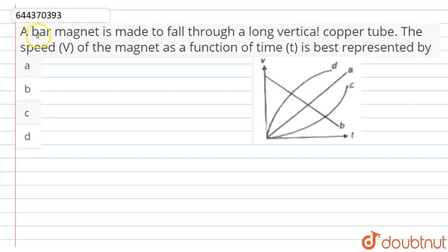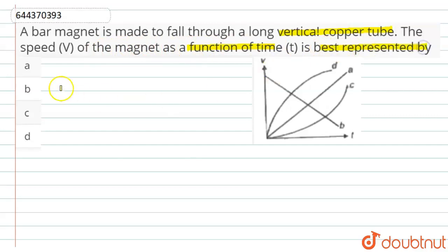Hello dear students. Here the question is: a bar magnet is made to fall through a long vertical copper tube. The speed V of the magnet as a function of time t is best represented by which of the following graphs?